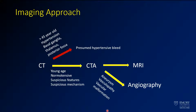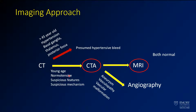Thinking about our imaging approach to this patient: we got the CT. This person was relatively young at 41 years old and was not normotensive. Otherwise, it was a classic appearance for a hypertensive hemorrhage. In this case, we went on to CTA and MRI. This patient had both, and they were ultimately both normal.